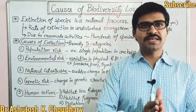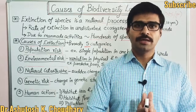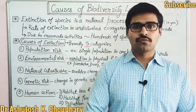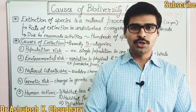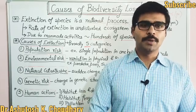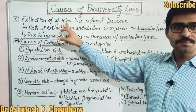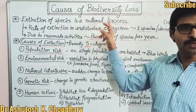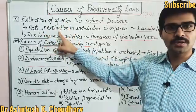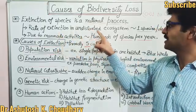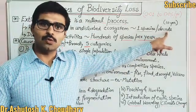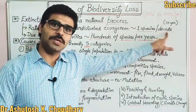We can simply say the extinction of biological diversity or biological species. The extinction of biodiversity loss may be natural or manmade. The extinction of species is considered a natural process, but due to natural processes the rate of extinction or loss of biodiversity is very slow — about one species per decade.